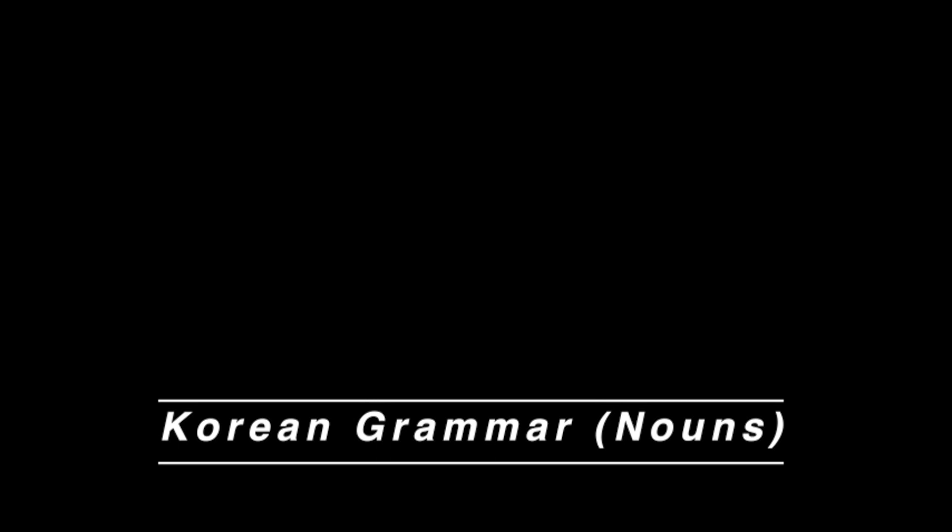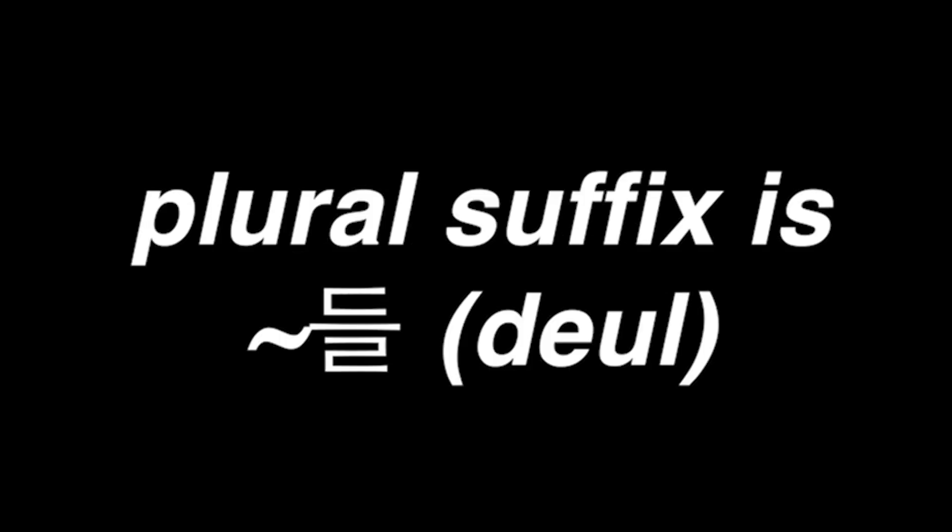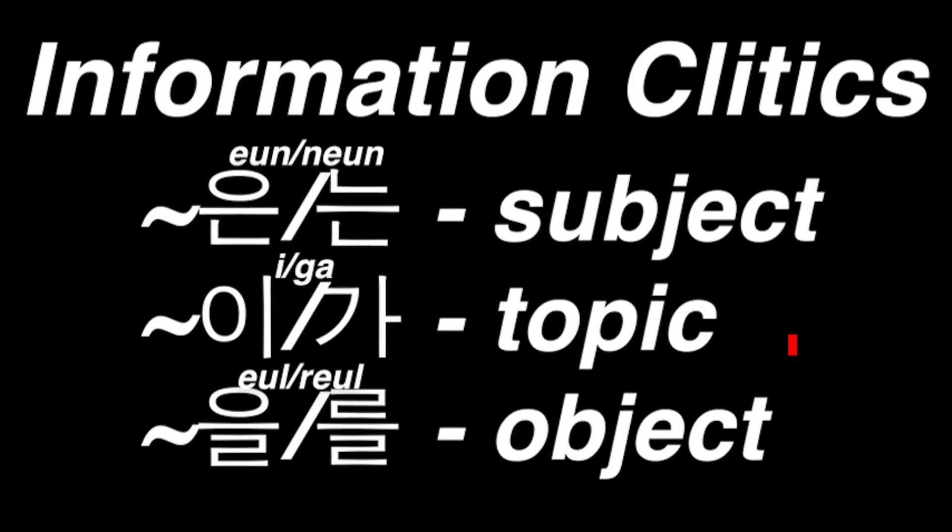Let's talk about Korean's grammar. Korean nouns don't inflect for gender, and even though there is a plural suffix, you can usually go without using it. As for case, Korean uses clitics. The three most important clitics are the information clitics: the topic marker, subject marker, and object marker. The topic and subject often get mixed up due to their similar functions, but generally the subject marker marks old or factual information, while the topic marker marks new and specific statements. The topic marker can emphasize the subject, while the subject marker can emphasize the description.